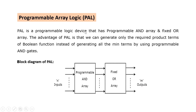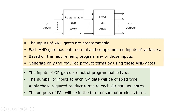The second type of PLD is Programmable Array Logic, PAL. In the block diagram, you can see the input device is the programmable AND array, and the output device is the fixed OR array. The number of inputs should be m inputs and the total number of outputs from the fixed OR array should be m outputs. The inputs of AND gates are programmable, meaning each AND gate has both normal and complemented inputs of variables. Based on the requirement only, we program the inputs with the AND array device to generate only the required product terms. Regarding the output device, the fixed OR array, the inputs of OR gates are not programmable — they are fixed type. The outputs of the PLD are available in the form of sum of products only.